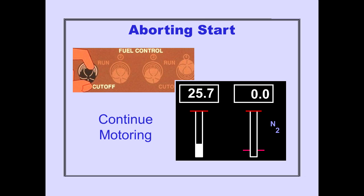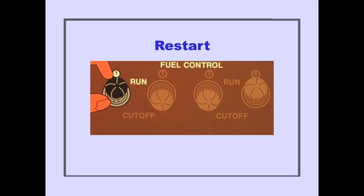Moving the fuel control switch to cutoff aborts the start. Engine motoring should be continued to clear out trapped fuel or vapors. If a restart is desired, placing the fuel control switch to run restarts the engine.